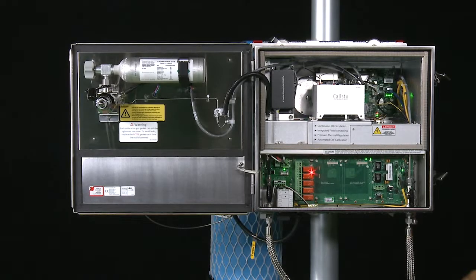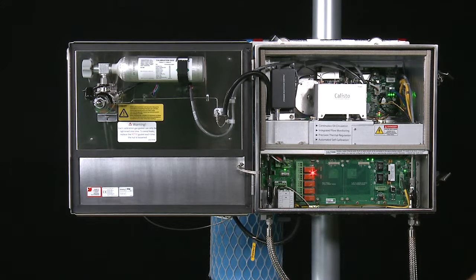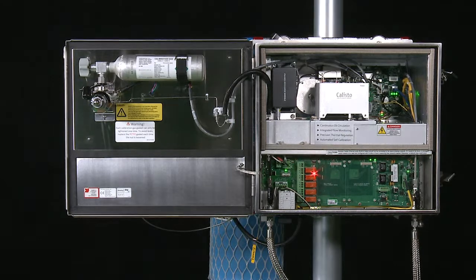This concludes the instructions for replacing the calibration gas module on Callisto models C501 and C901. Please remember to follow these instructions carefully and contact us if you have any questions.